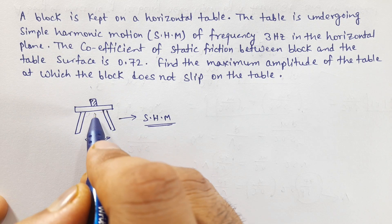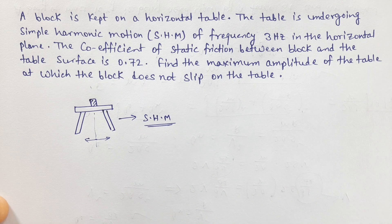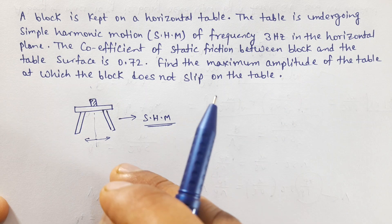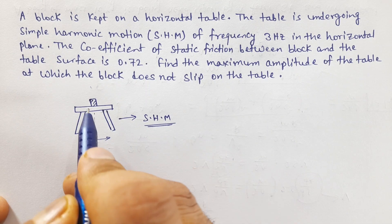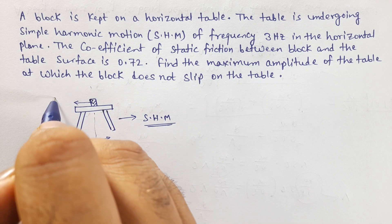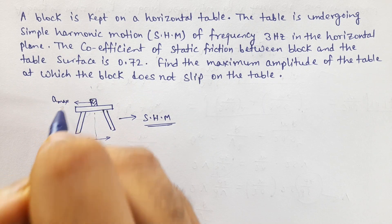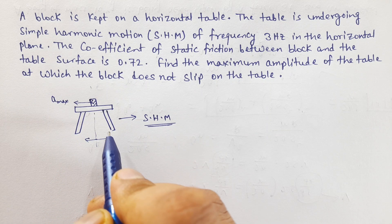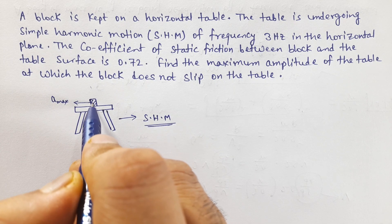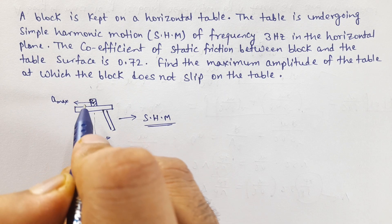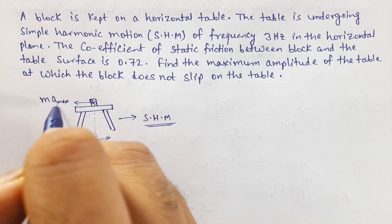First, we need to find the maximum acceleration of the table. This block experiences a pseudo force on the back side due to that acceleration. The value of pseudo force is M times A_max.